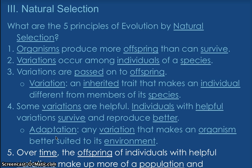Number four: some variations are helpful. Remember, just like mutations, some might not help, some might hurt, and some might have no effect. Individuals with helpful variations survive and reproduce better. An adaptation by definition is any variation that makes an organism better suited to its environment. If you remember New Beast Discovered — you made adaptations to make your beast survive in an imaginary environment. Don't overthink these; you know them better than you think — we're just adding science words. And then number five: over time, the offspring of individuals with helpful variations end up making more and more of the population, eventually becoming a separate species.